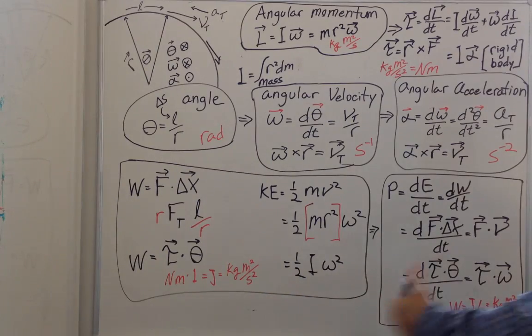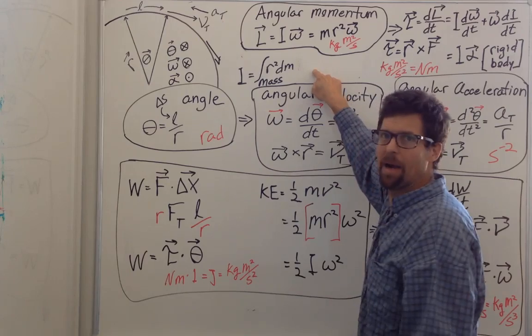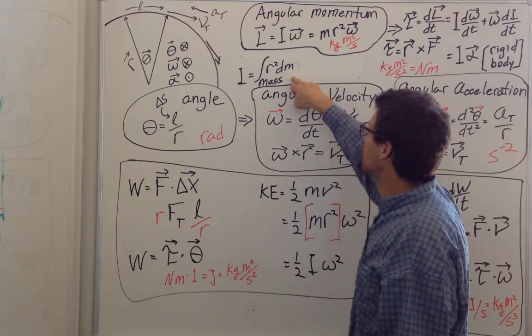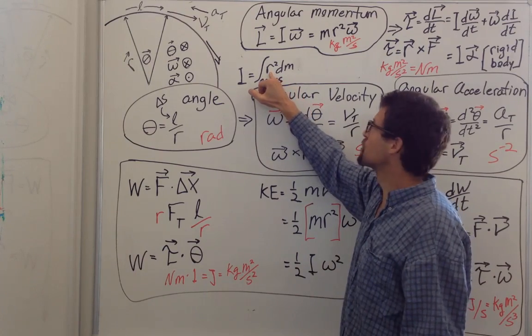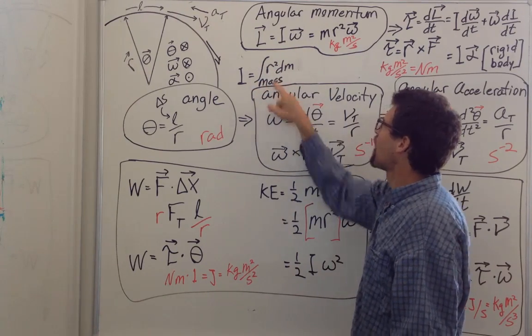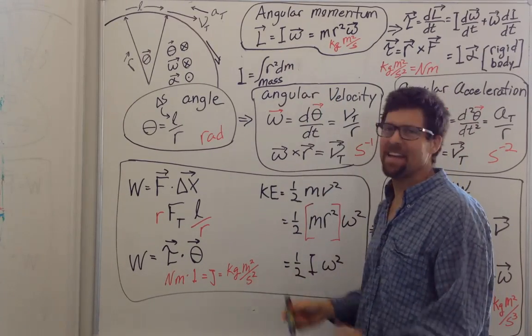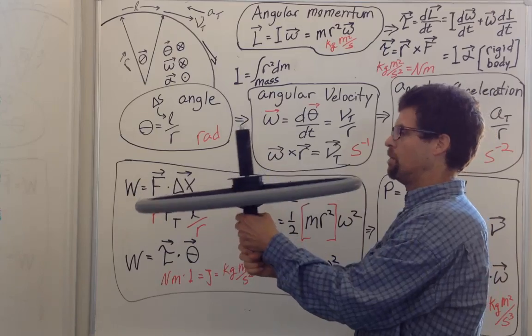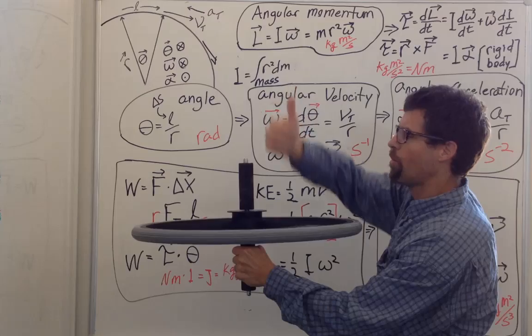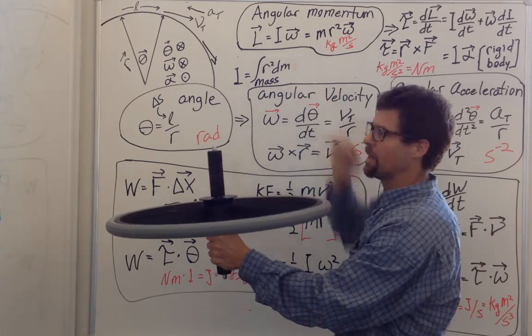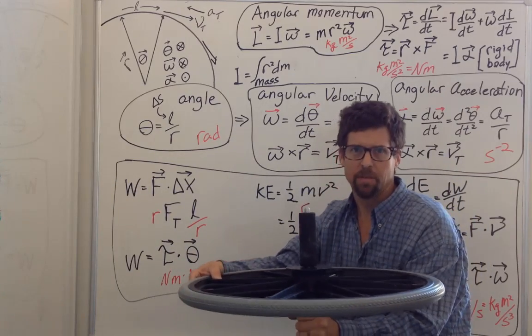When we went in this direction for linear mechanics, we multiplied by mass. Instead, we're going to multiply by the moment of inertia, which is the mass weighted with r², the integral of r² over the entire mass of your solid body. Angular velocity times I is angular momentum. If I have something spinning that has a moment of inertia, it has angular momentum oriented in the same direction as omega. It can be thought of as how hard it is to stop something from rotating.